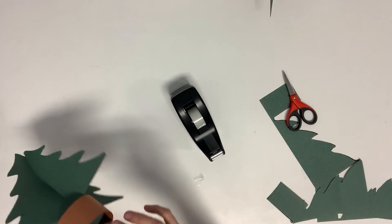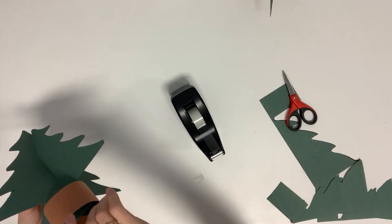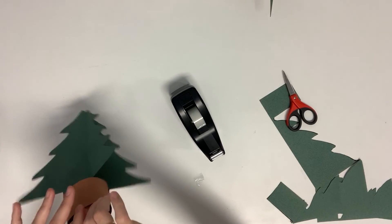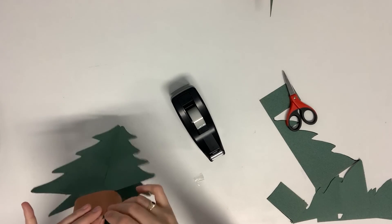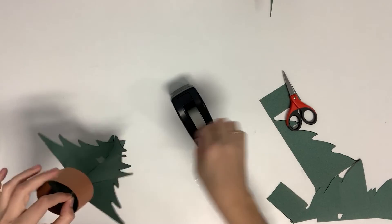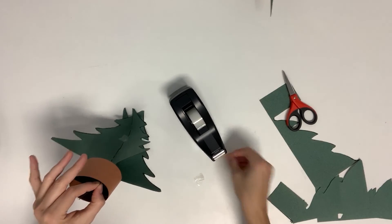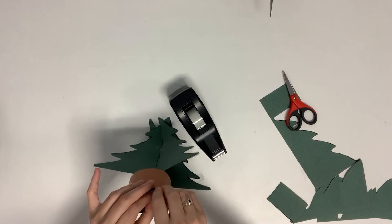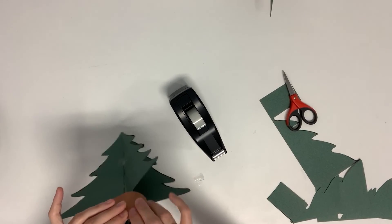you can add a piece of tape. It's probably easiest at the bottom to kind of just tape the tree to the brown base.